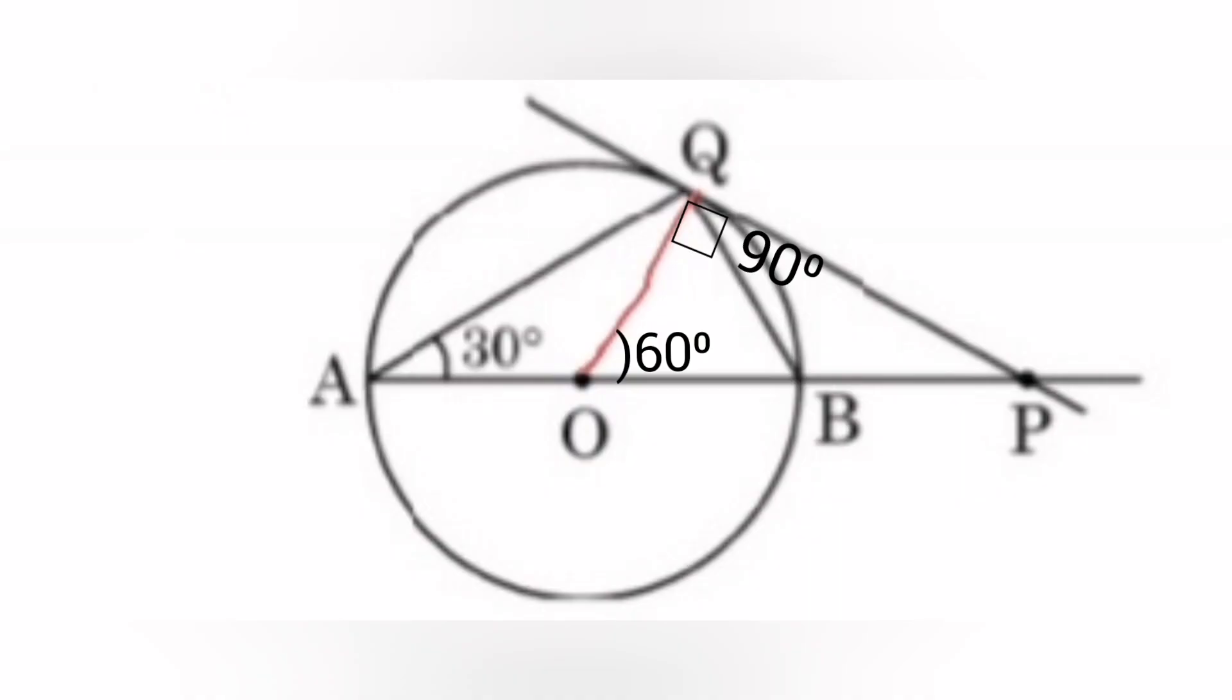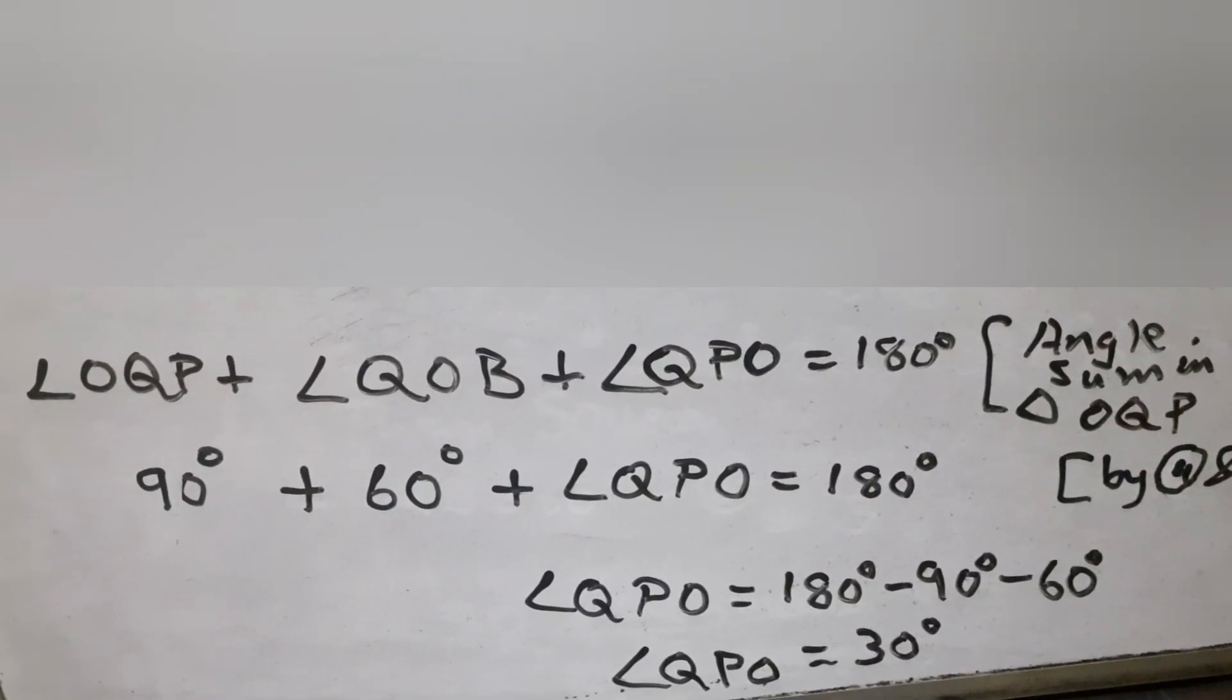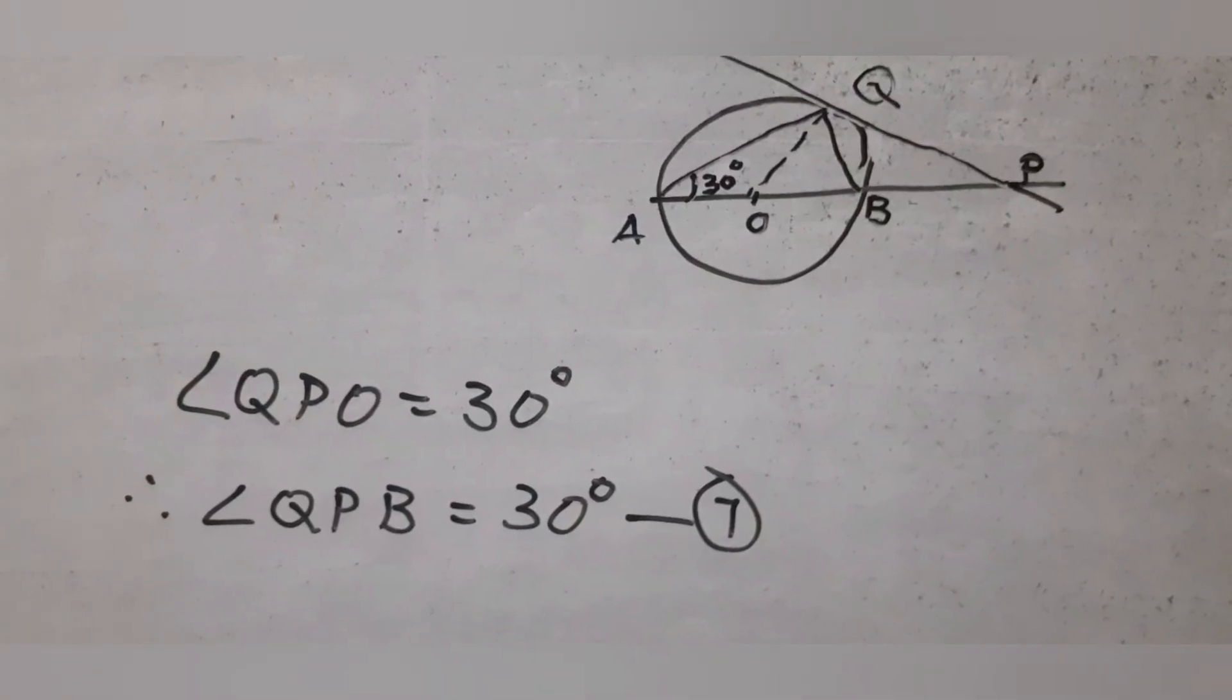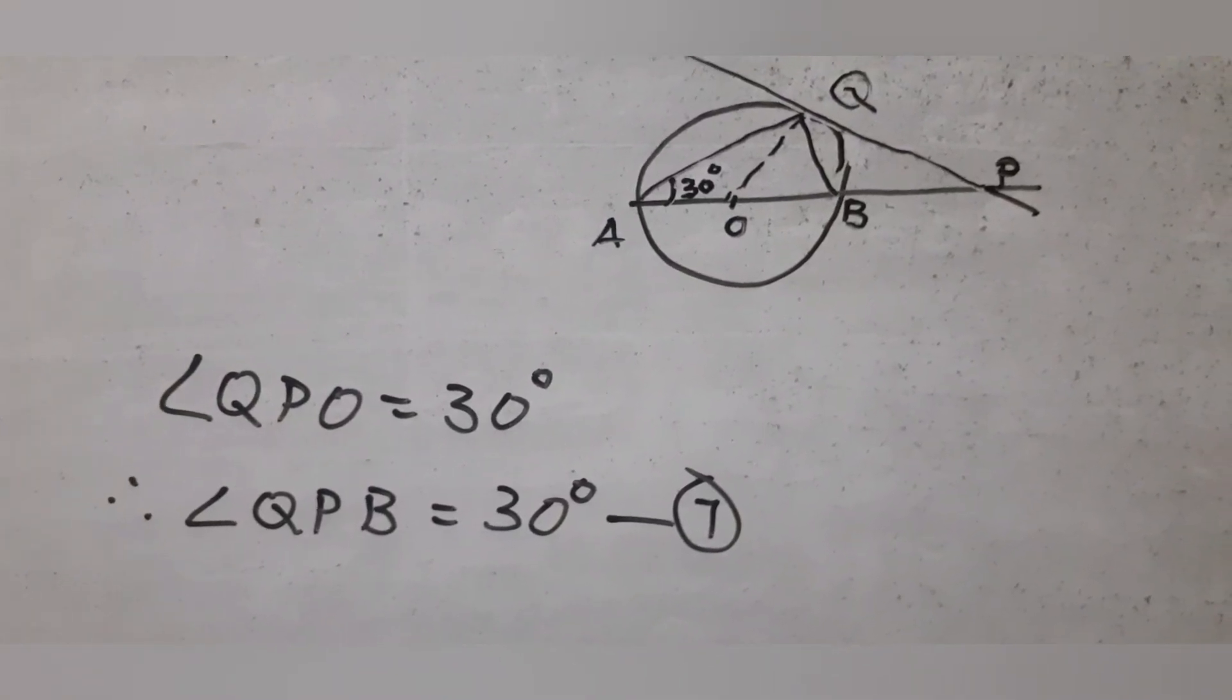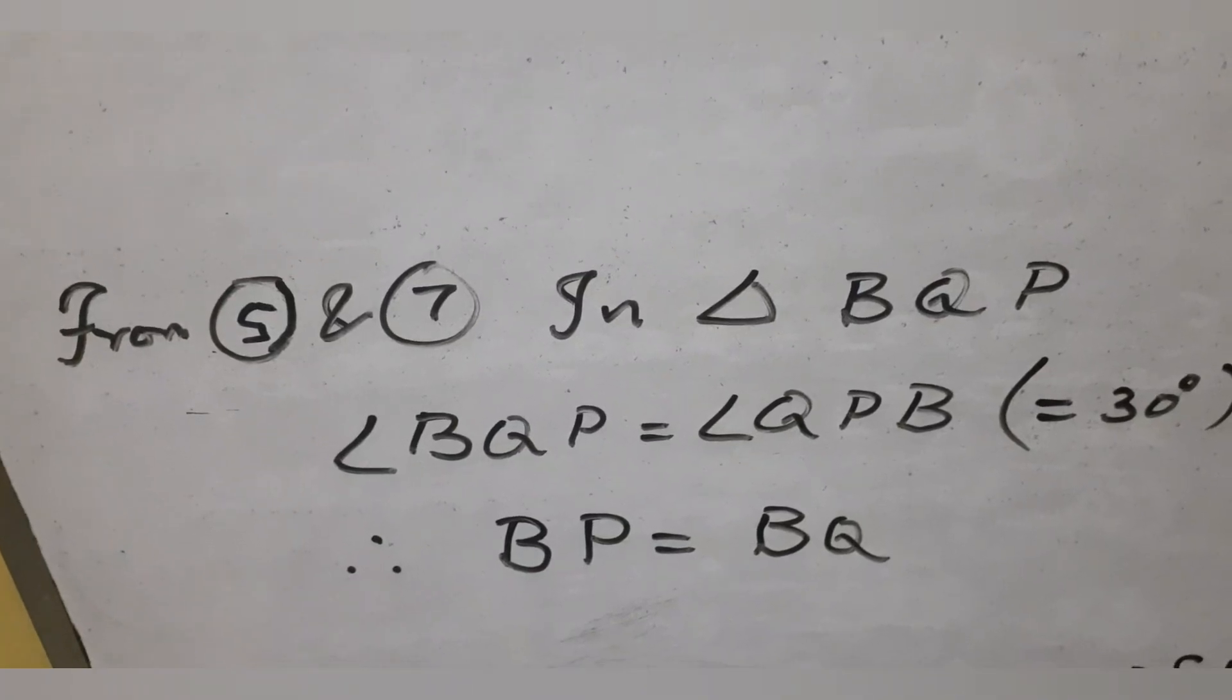So in triangle OQP using angle sum of a triangle we find angle QPO equal to 180 minus 90 minus 60 which is 30 degrees. Angle QPO is the same as angle QPB, so angle QPB is equal to 30 degrees. In triangle BQP, angle BQP equal to angle QPB equal to 30 degrees, so BP equal to BQ.